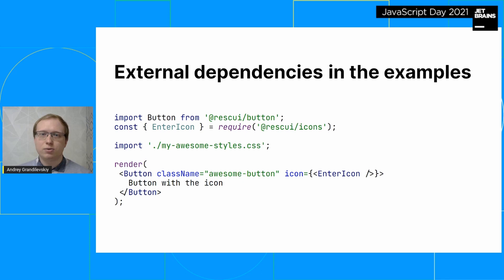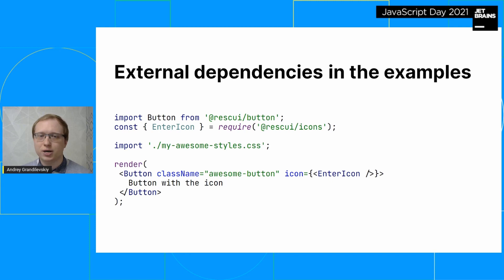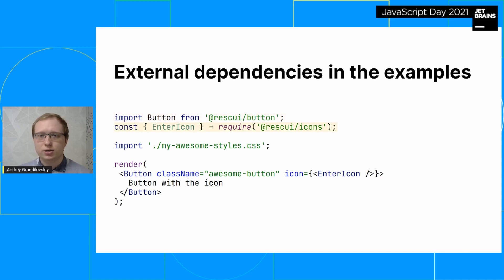But problems arise when the code includes external dependencies. The most trivial situation: you want to show an example of your button with an icon. But how does the browser know exactly where to get this button and icon from? Moreover, dependencies can be of different types — ES6 imports, CommonJS requires, as well as side effects, for example uploading styles to a page.